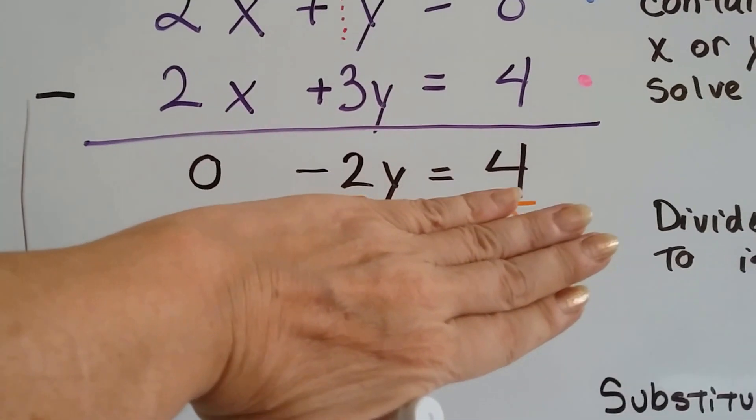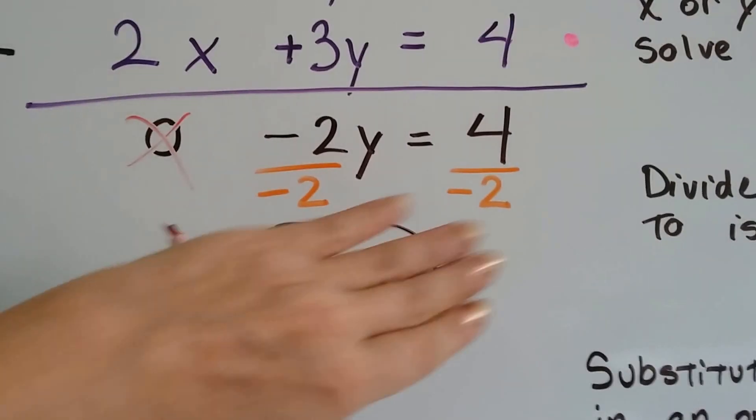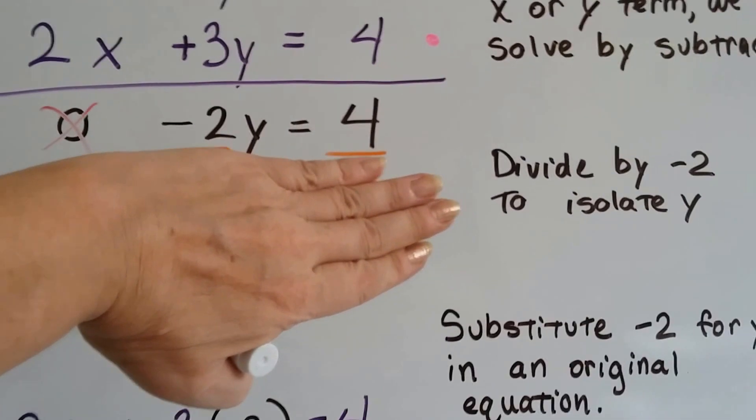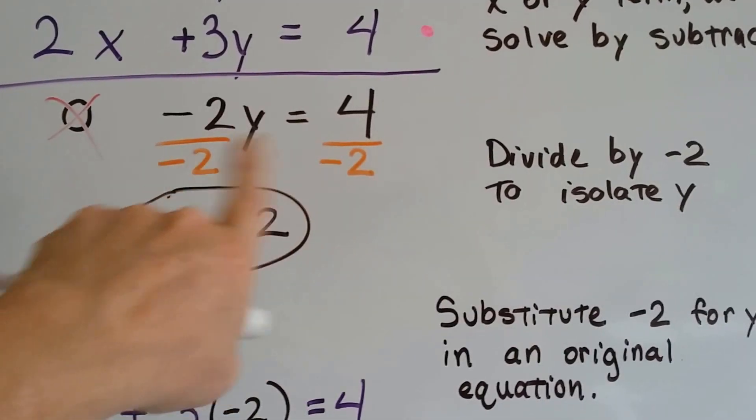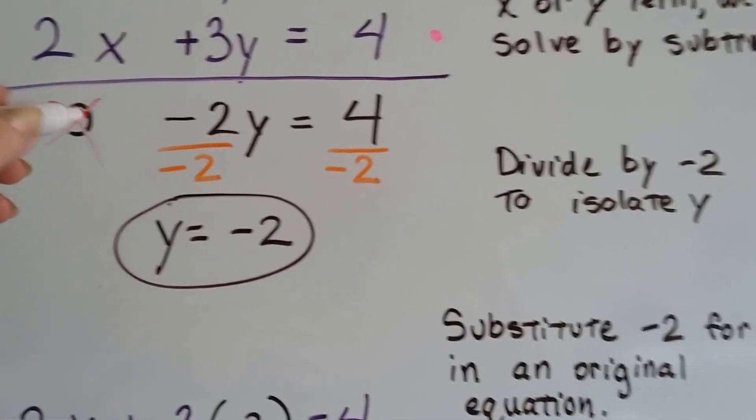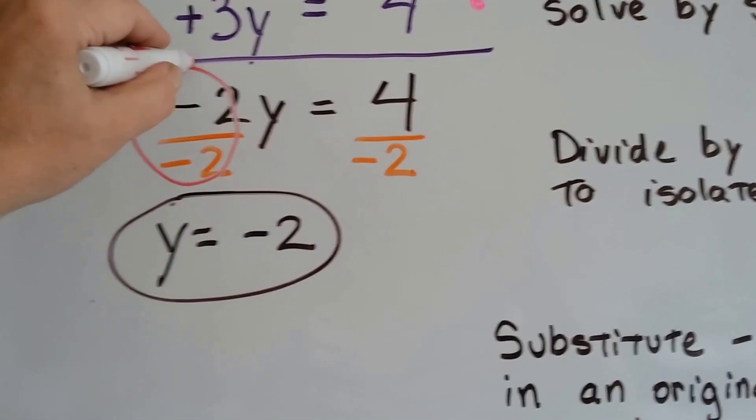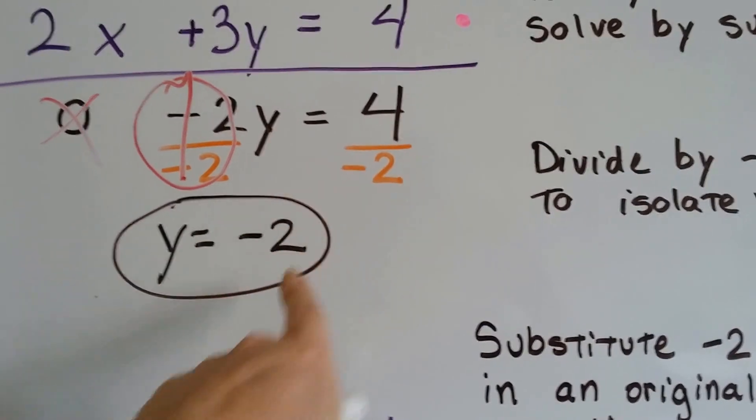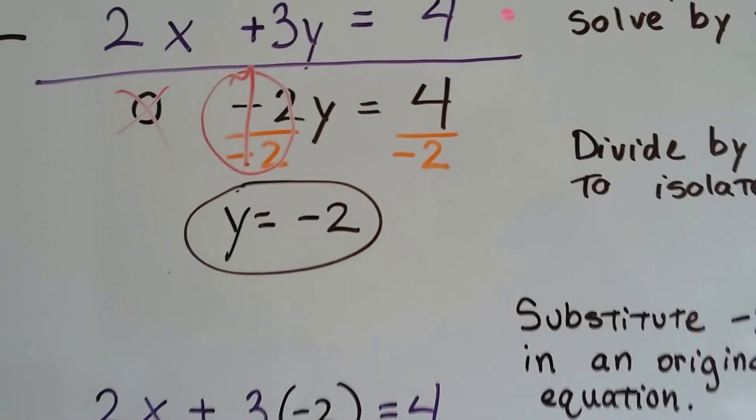So now we've got this, and we can ignore this. We've got negative 2y equals 4. We can divide by negative 2 to isolate that y on each side, and this negative 2 over negative 2 gives us a 1, and we have 1y, and 4 divided by negative 2 is negative 2. So we know y equals negative 2.